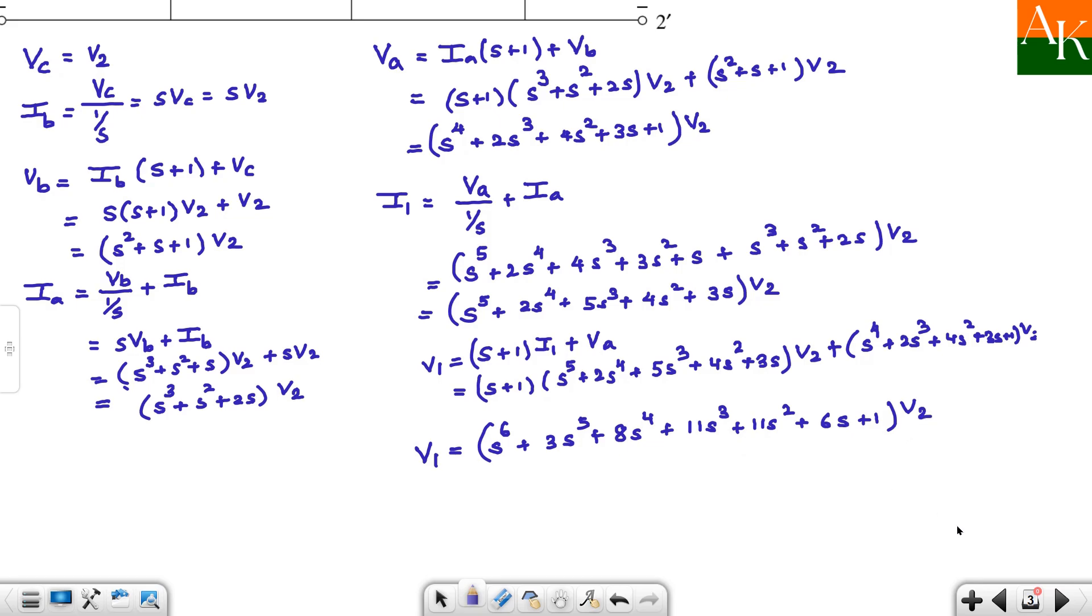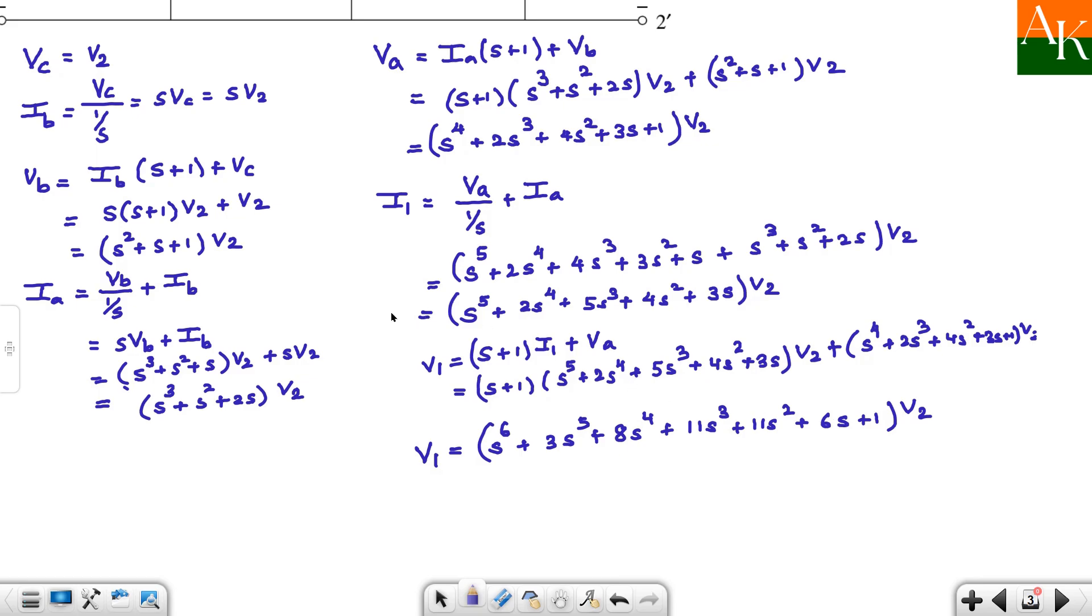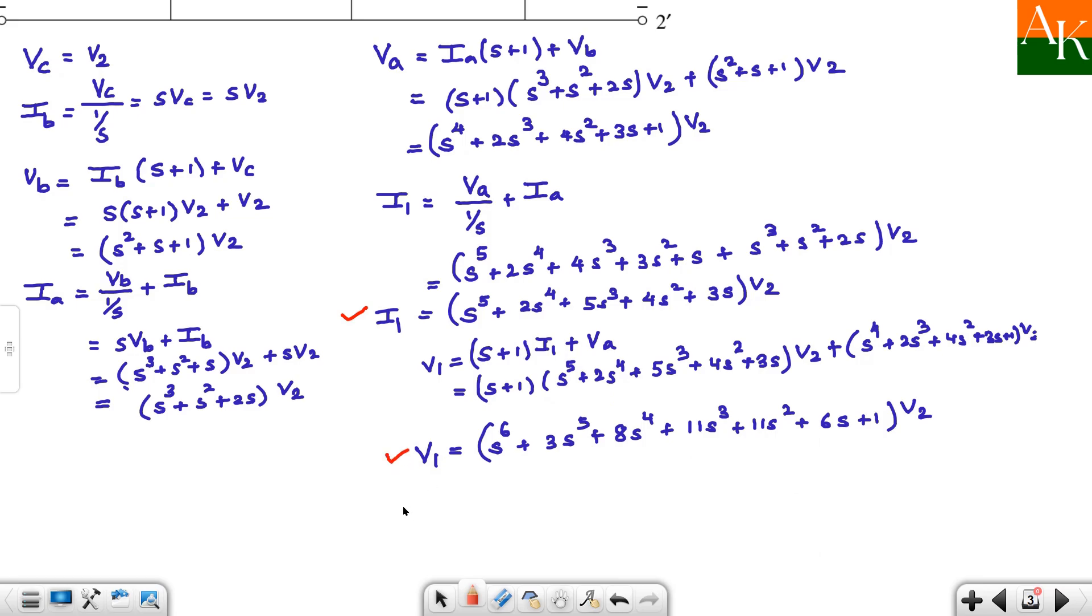The problem asked to find the driving point impedance, that means z11, which is nothing but v1 by i1. So v1 we have and i1 we also have. So v1 by i1 you can easily find out. When you divide v1 by i1, basically this v2 will get cancelled. And you will get the answer as, in the numerator this term: (s⁶ + 3s⁵ + 8s⁴ + 11s³ + 11s² + 6s + 1) divided by the denominator.